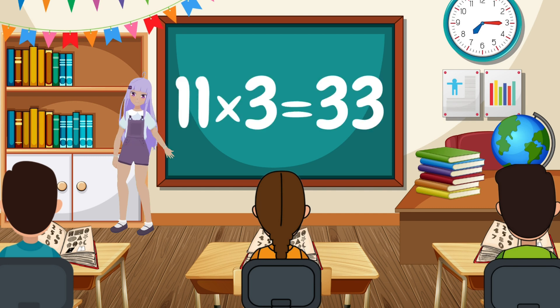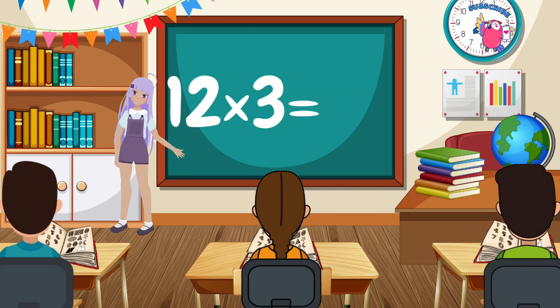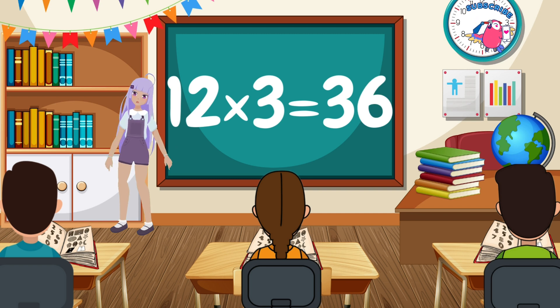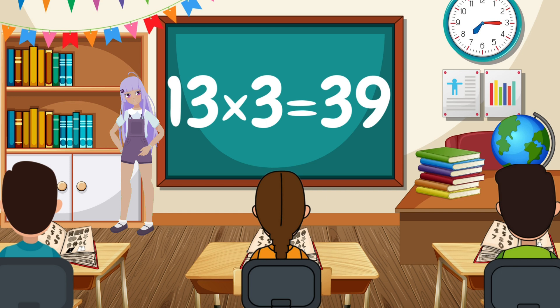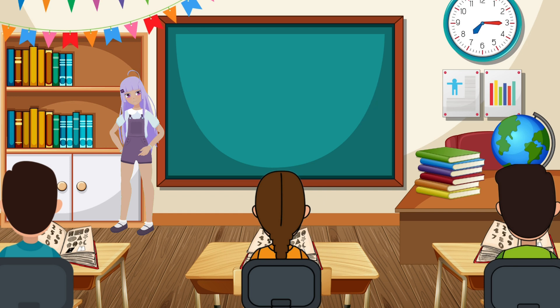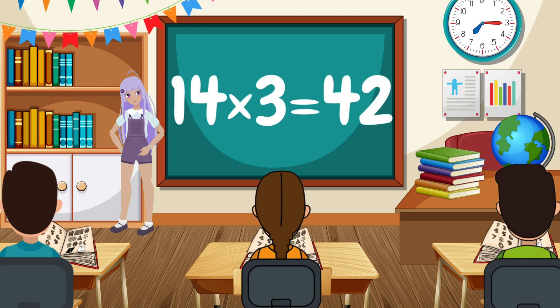12 multiplied by 3 equals 36. 13 multiplied by 3 equals 39. 14 multiplied by 3 equals 42.